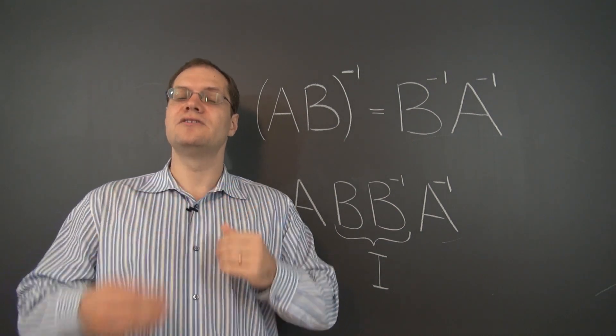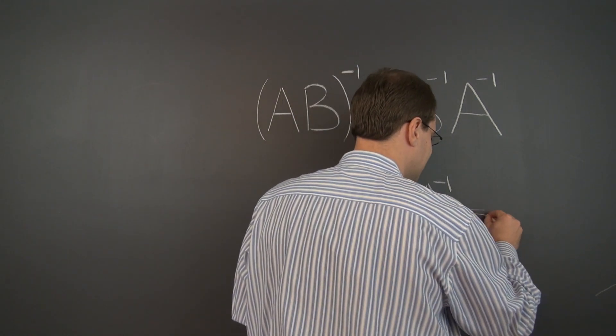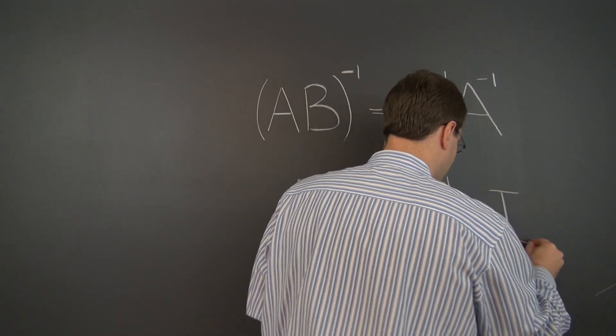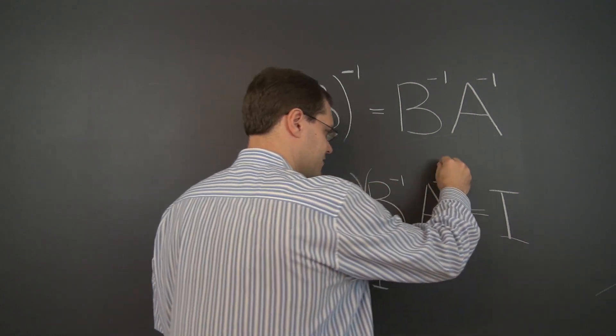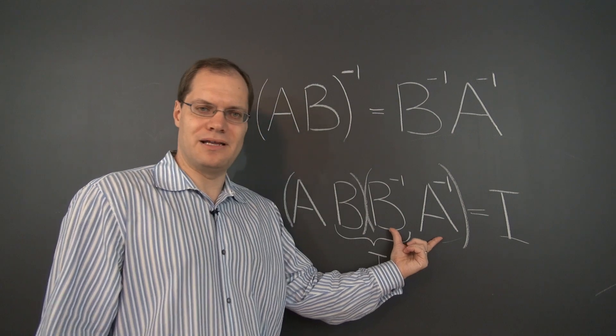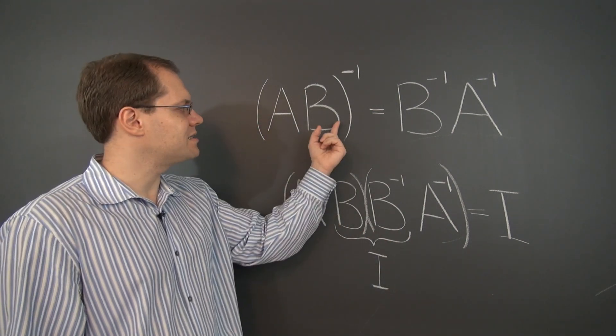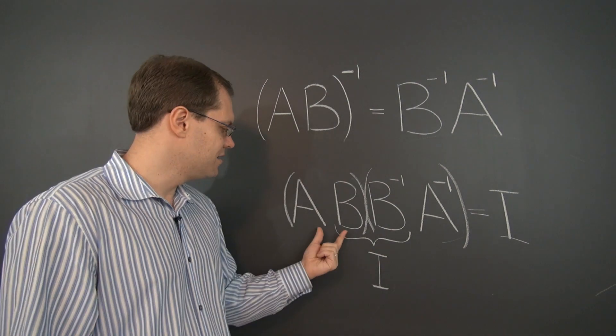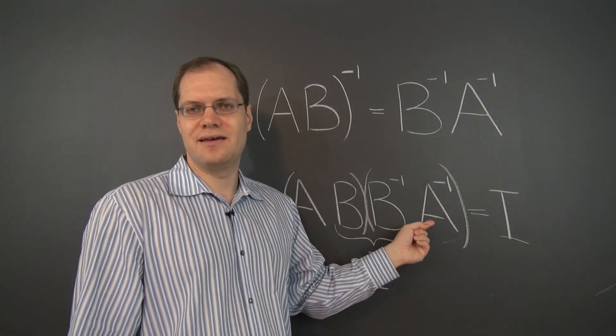And we're left with A, A inverse. And once again, we have a matrix touching its inverse. And when that happens, we get the identity matrix. And because this times this is the identity matrix, this combination must be the inverse of this. And that's exactly what this formula is saying. That the inverse of AB is B inverse A inverse.